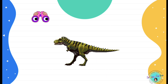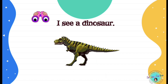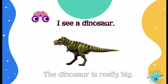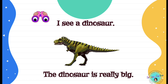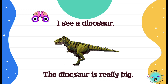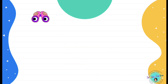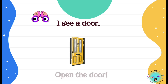I see a dinosaur. Is the dinosaur big or small? The dinosaur is really big. I see a pig. I see a door. Open the door.